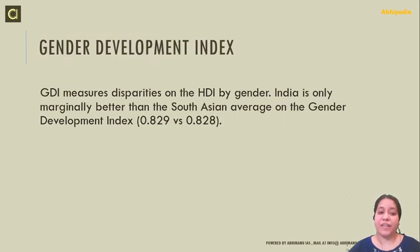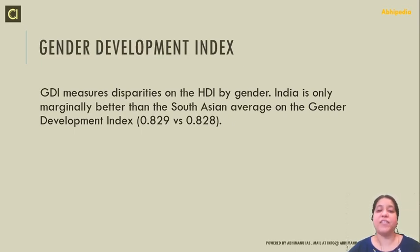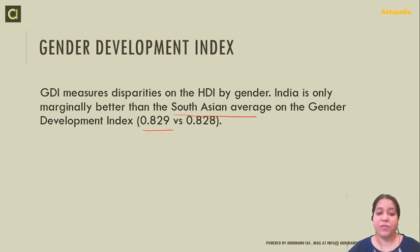The Gender Development Index measures disparity in the Human Development Index by gender. India is only marginally better than the South Asian average on this index, with a score of about 0.828.